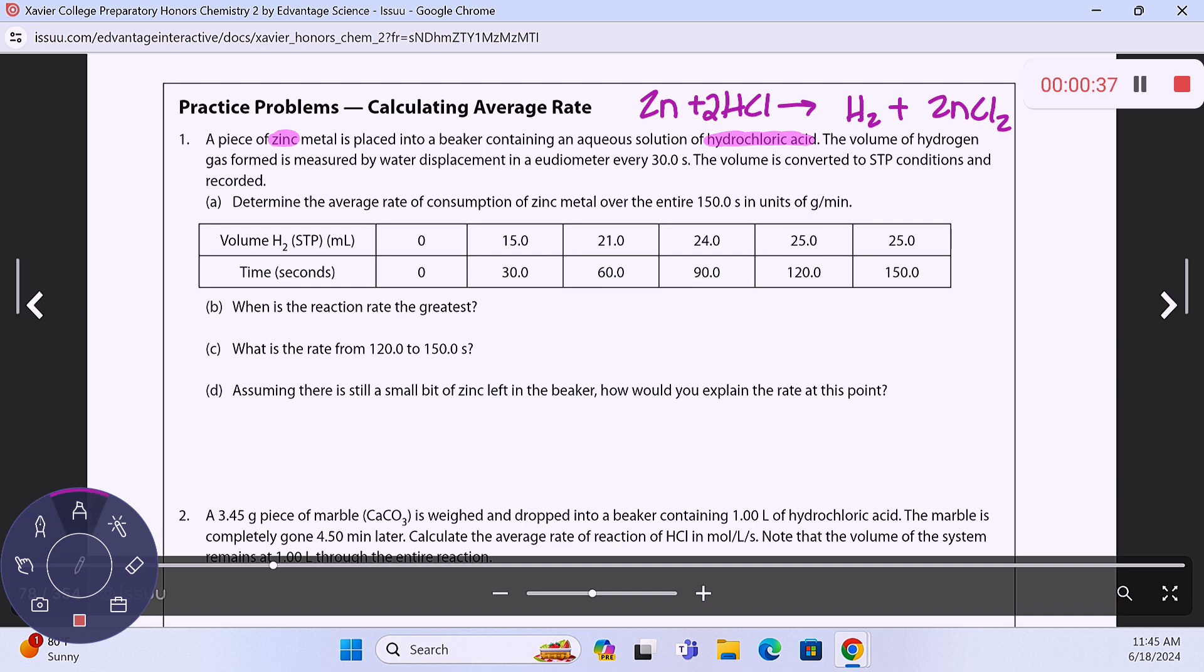It says the volume of hydrogen gas formed is measured by water displacement in a eudiometer every 30 seconds. The volume is converted to STP conditions and recorded. So here's the volume of hydrogen gas, and then here is the corresponding time. You can't do that unless you calculate the milliliters per second of the hydrogen first, because that's all I have the data for.